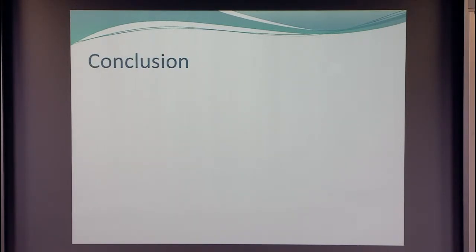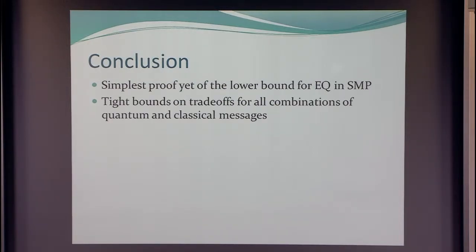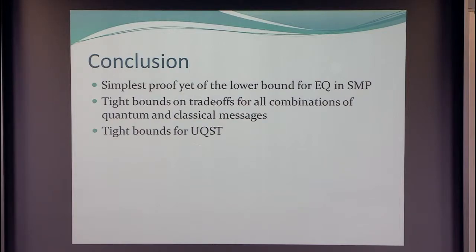In conclusion: we have the simplest proof yet for the equality problem in simultaneous message passing, by killing correlations and showing that the encodings are close to a product distribution — which they shouldn't be, because then you cannot tell apart the distribution on one-inputs from zero-inputs. We have investigated all non-deterministic versions and given tight bounds up to log factors everywhere. Using these lower bounds, we can also give lower bounds for the task of untrusted quantum state transfer, and essentially our protocol is optimal.